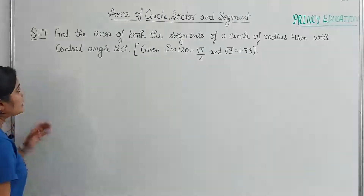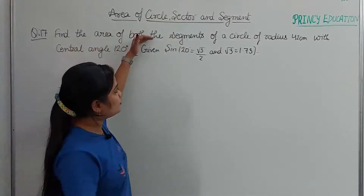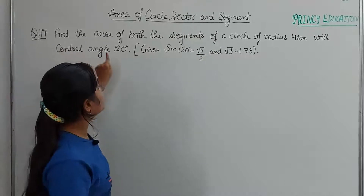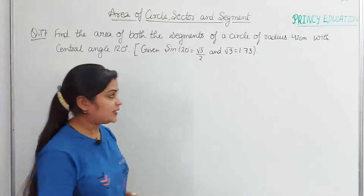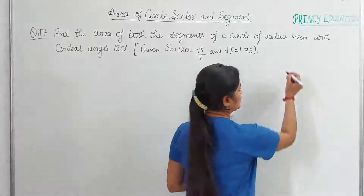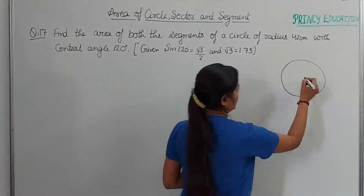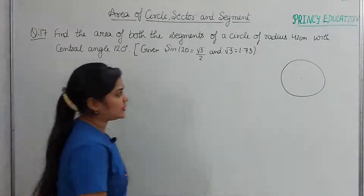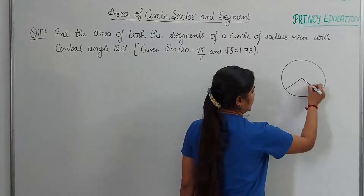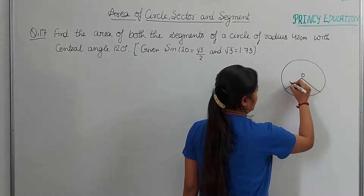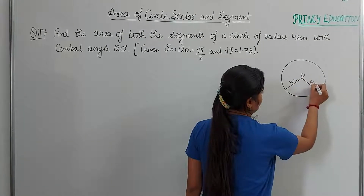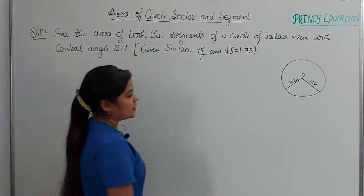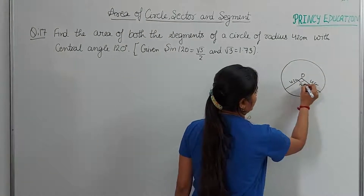Let's look at the question: find the area of both the segments of a circle of radius 42 cm with central angle 120 degrees. First of all, we have to make a diagram. A circle is given with radius 42 cm. The center is O, both radii are 42 cm, and the central angle of the chord is 120 degrees. We need to calculate the area of both segments.